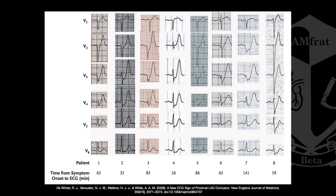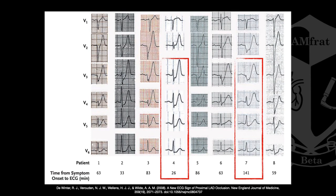Looking at a chart from the initial study, patient number four had a time from symptom onset to ECG of just 26 minutes, and already exhibited this pattern — notably in V3, progressing more subtly out to V6. Patient number seven was at 141 minutes from symptom onset, and the pattern was still present. This means from 26 minutes all the way out to 141 minutes, there's no transition from ST depression to ST elevation like we're traditionally taught with STEMIs. With the DeWinter's T wave, the pattern is persistent and stays that way — there's no transition to ST elevation.